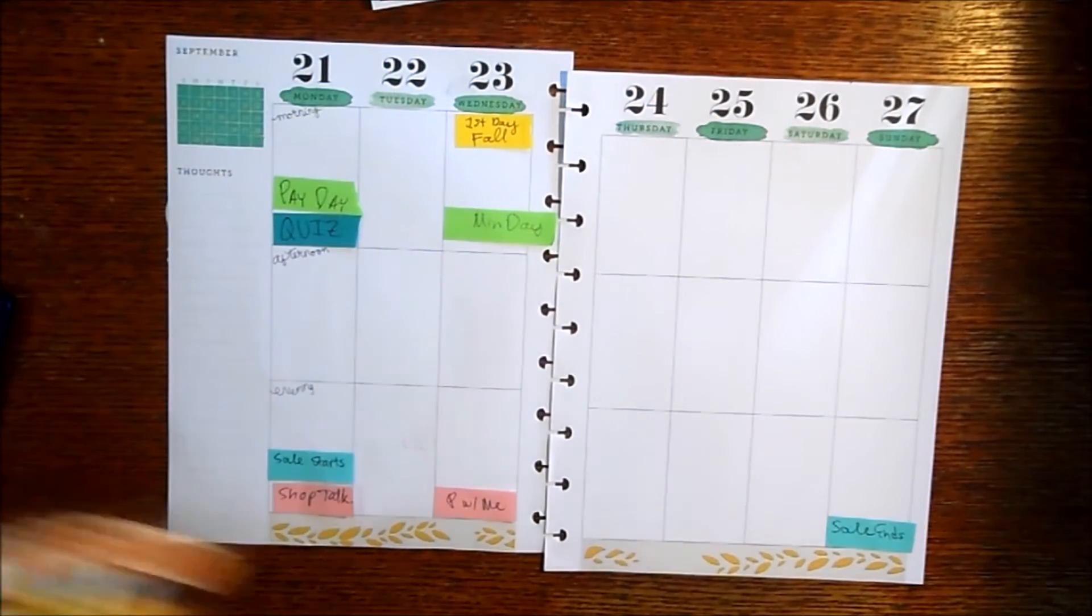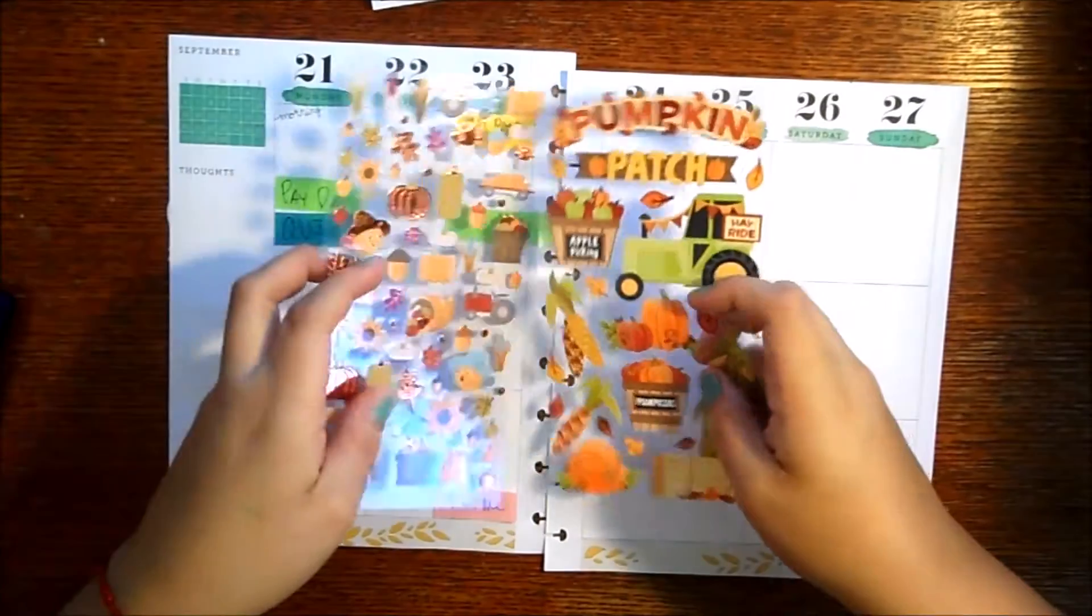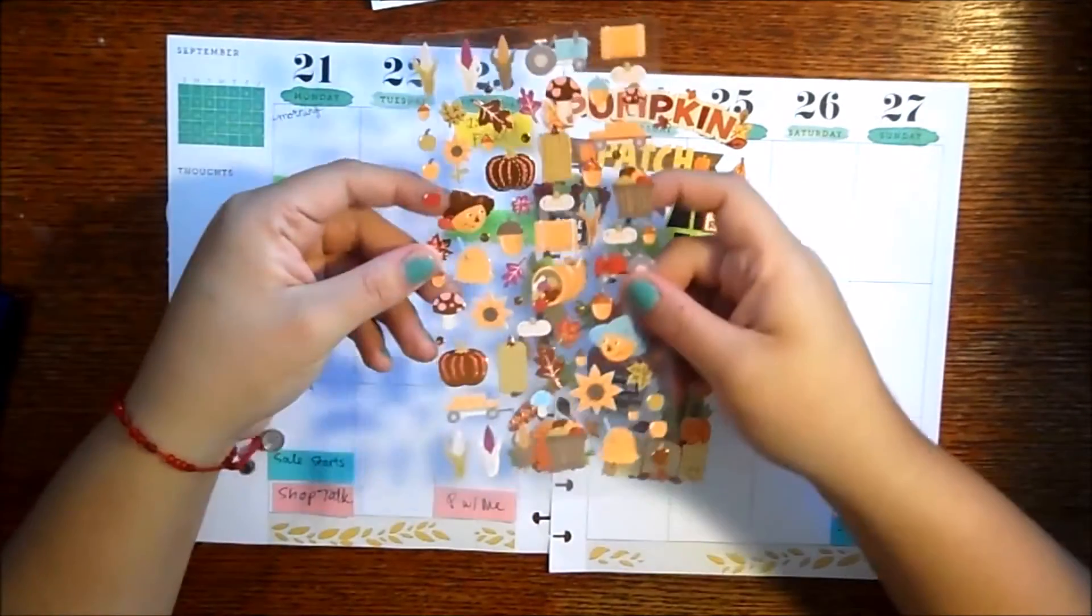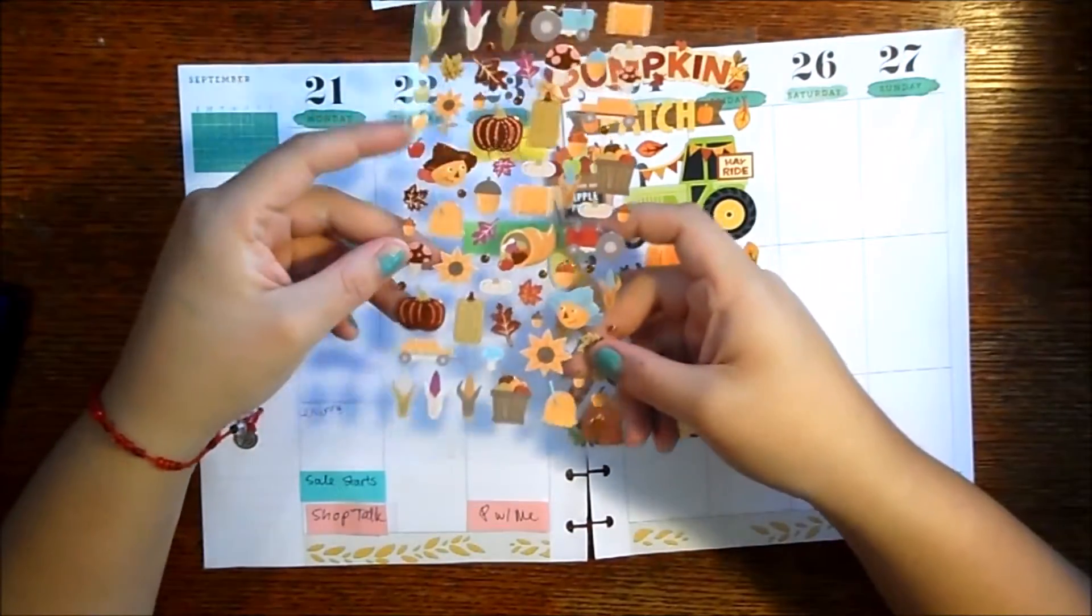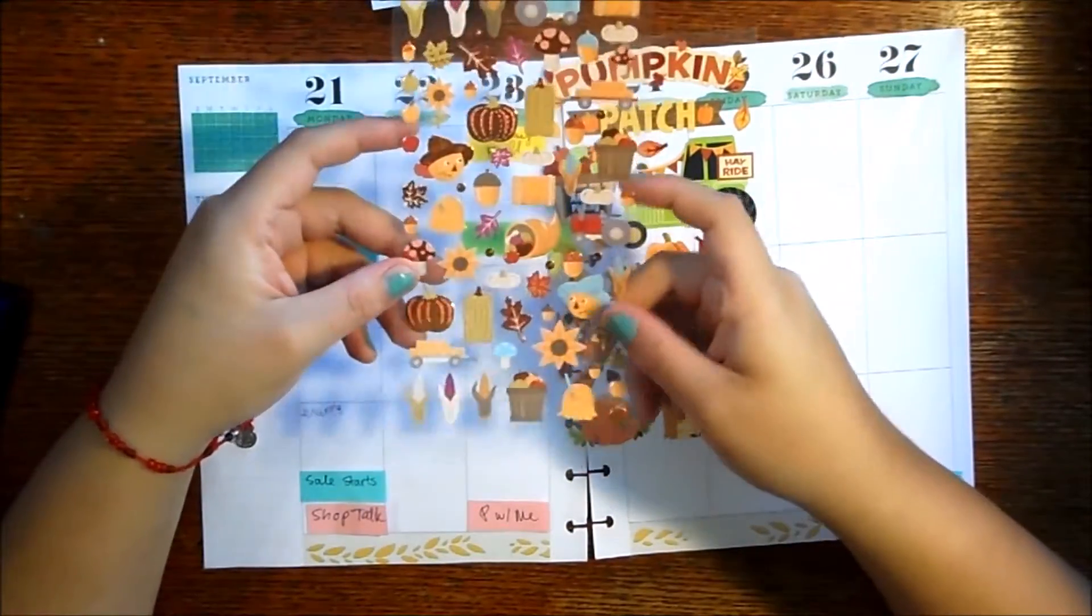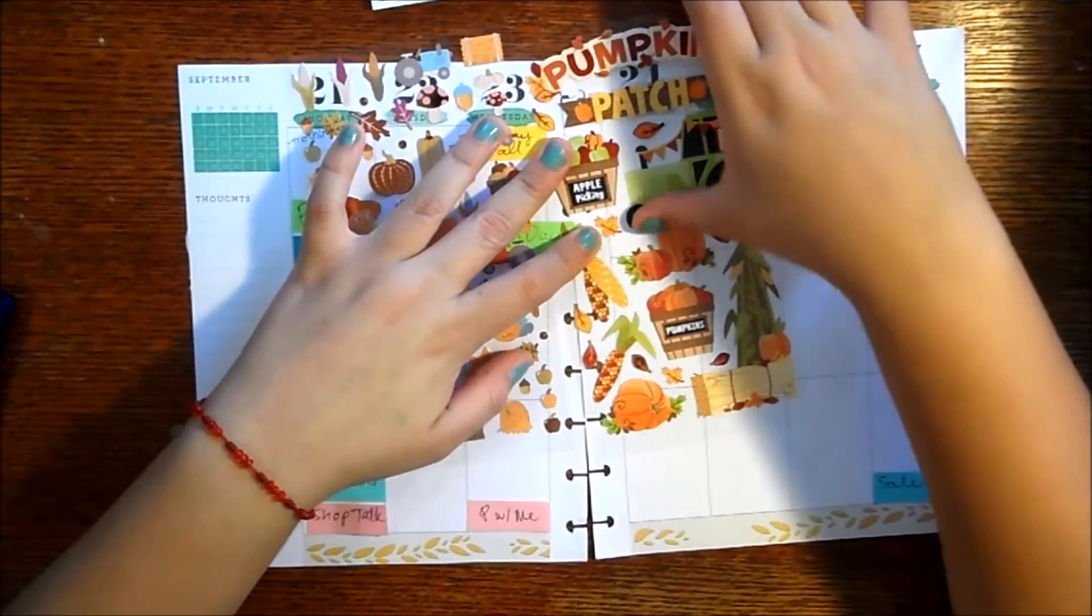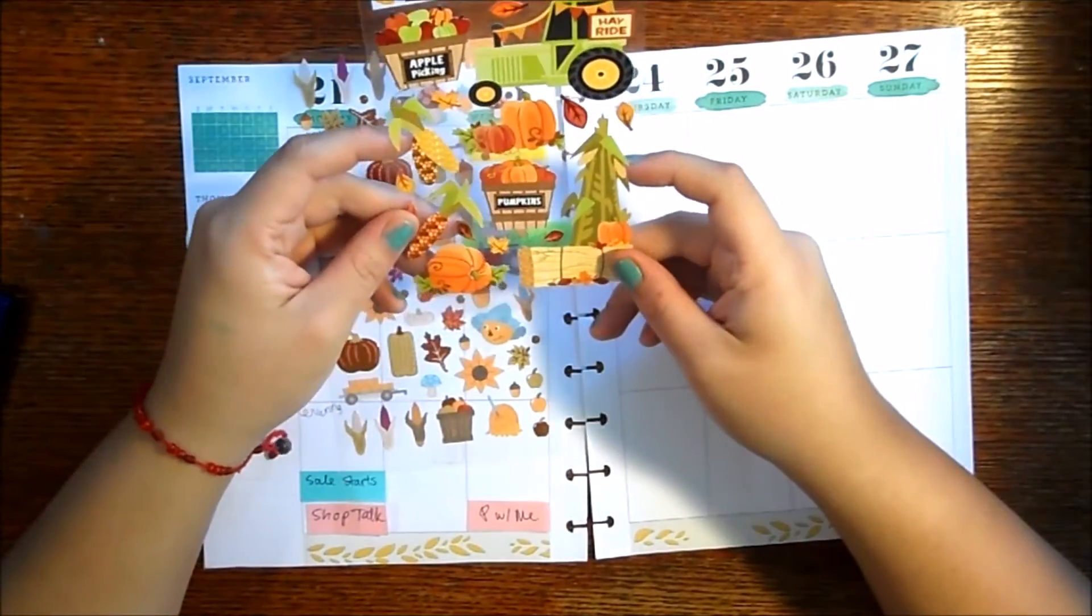And I'm probably going to end up using this. These are from, I believe, Sticko. So I have these little cute accent pieces. Very bronzy and awesome. Then I have these ones, which are a lot more matte, but also a lot bigger.